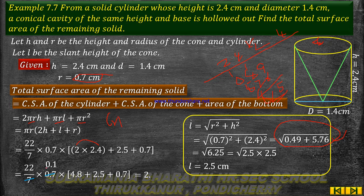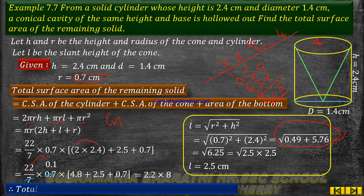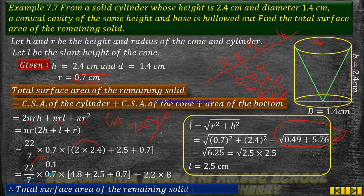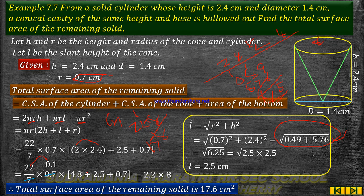Computing the product: 2.2 × 8 = 17.6. Therefore, the total surface area of the remaining solid is equal to 17.6 cm².